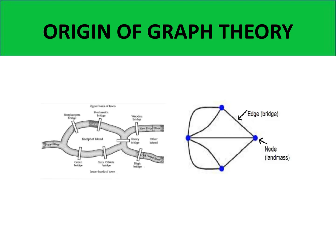Leonard Euler made use of the following graph. This graph has four blue points and seven lines connecting the four blue points. The four blue points represent the four islands of Königsberg, while the seven lines are the seven bridges. So that's why it's a classical problem in graph theory, which we call the seven bridges of Königsberg.